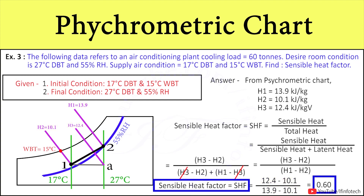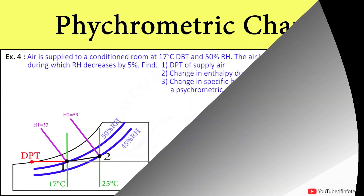So in this way, with the help of the psychrometric chart, we plot the process and we got the sensible heat factor of 0.6.